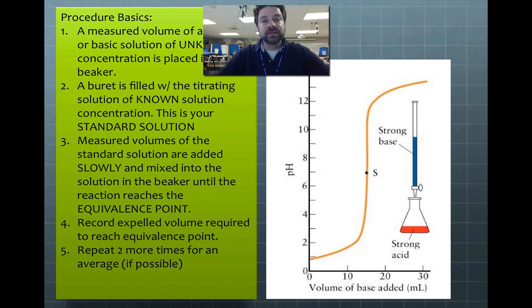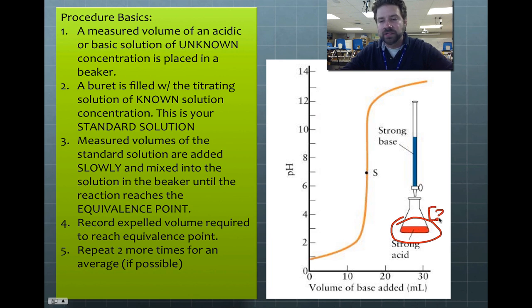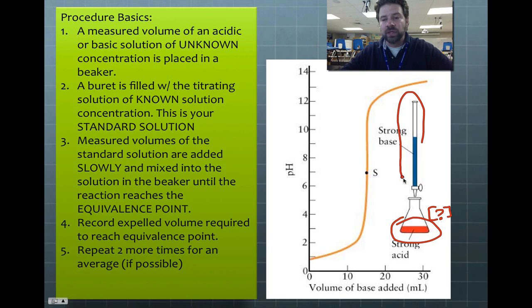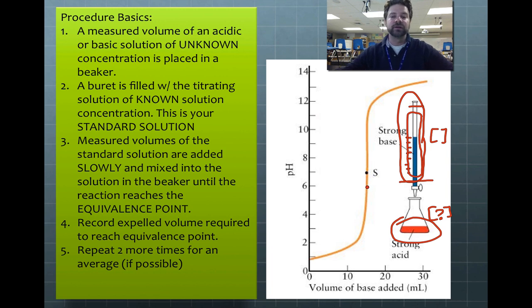Here are the procedure basics. First, a measured volume of the acidic or basic solution of unknown concentration is placed into a beaker. Second, a burette is filled with the titrating solution of known concentration — in this case a strong base of known concentration. The burette has graduations all the way down, so make sure you have enough liquid between the top and bottom graduation marks for a good initial and final reading.